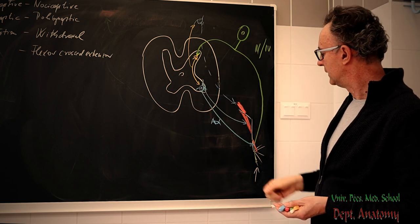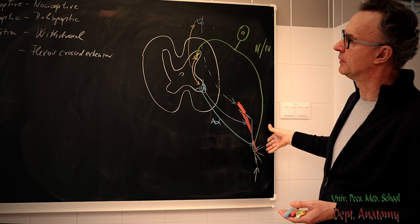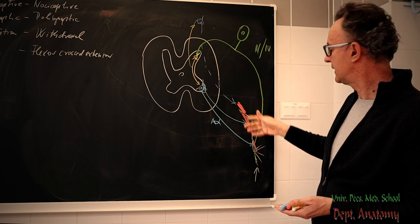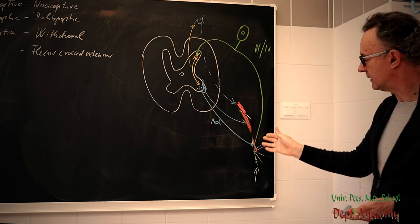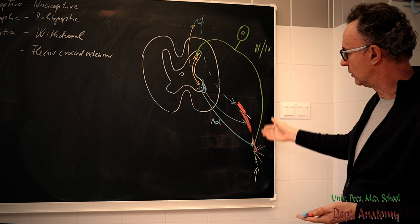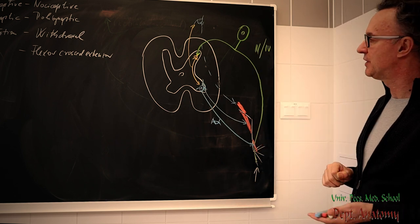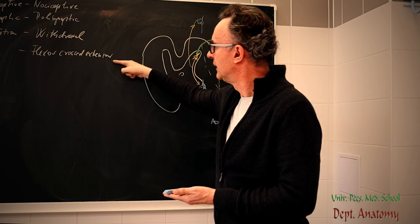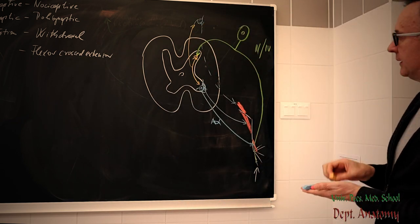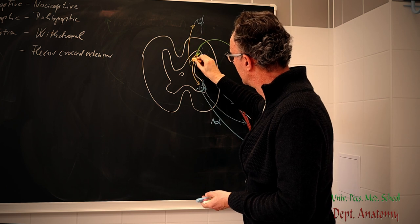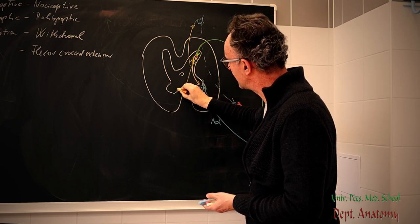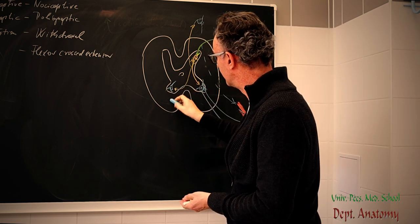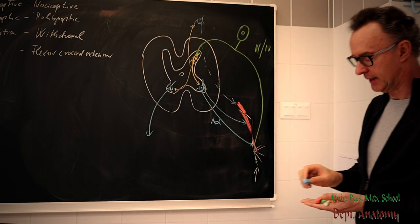Withdrawal, because we remove the given extremity from the painful area. From the site of the stimulus. And flexors, crossed extensor reflex. The flexors is now understood. Because we activated all the functional flexors. But we have to stabilize the contralateral extremity, the lower limb. That's why we have to include this crossing.